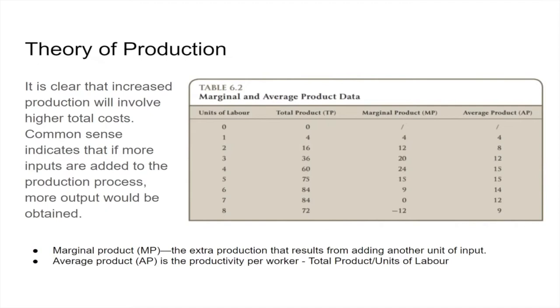Total product will go up, level out, and then start to decline as we run into the problem of too many cooks in the kitchen — people start bumping into one another and inefficiencies start running. So we have to ask ourselves: what's the most productive level here? If we look at it, the highest productivity in terms of total output is 84.